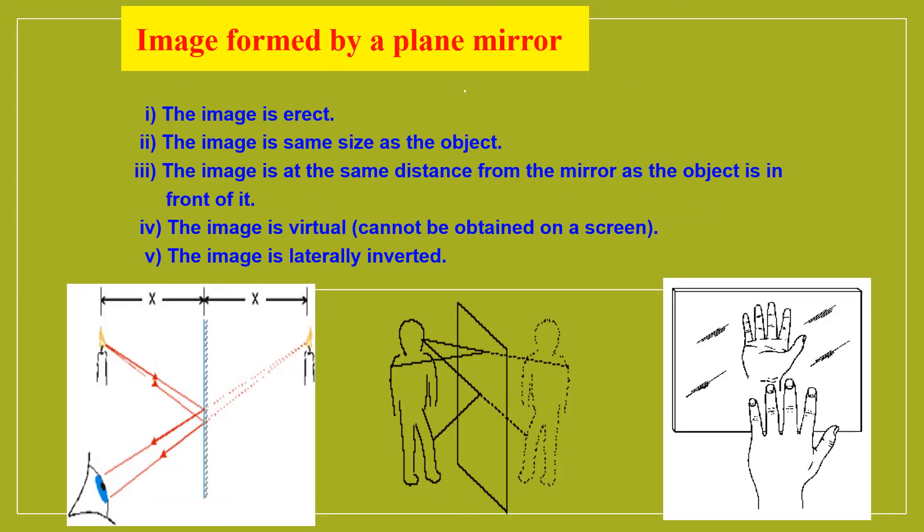We shall also revise what are the properties of image formed by a plane mirror. A plane mirror's image is always erect. The image is the same size as that of the object. The image is at the same distance from the mirror as the object is in front of it. The image is virtual, meaning it cannot be captured on the screen. The image is laterally inverted, meaning that left appears right and right appears left. So these are the characteristics of image formed by a plane mirror.